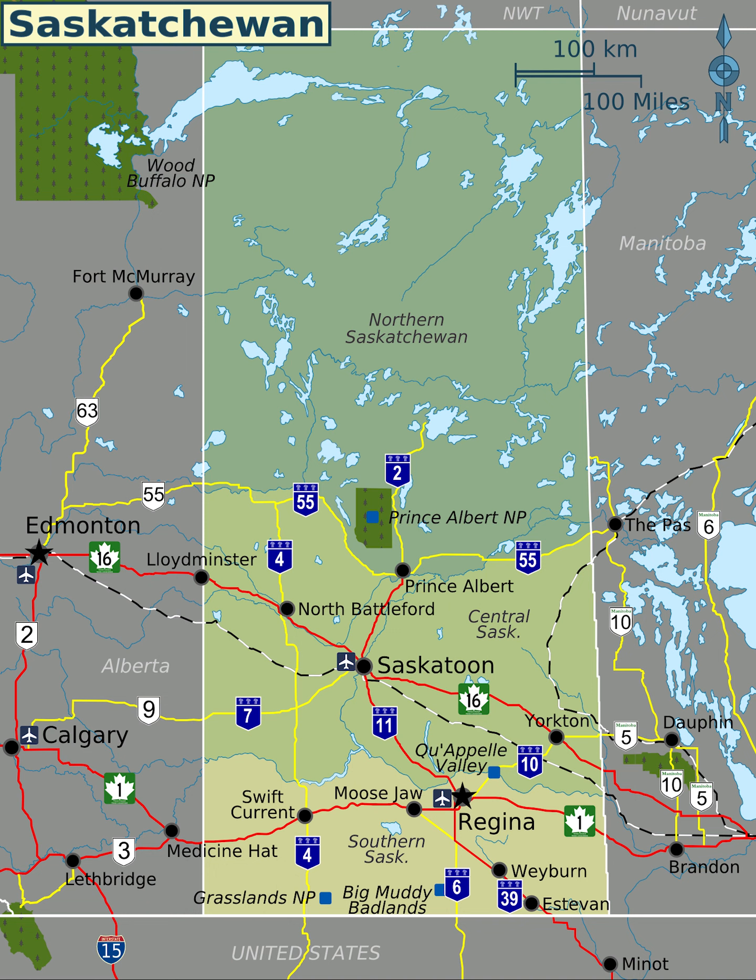The province's highest point, at 1,392 meters, is located in the Cypress Hills less than 2 kilometers from the provincial boundary with Alberta. The lowest point is the shore of Lake Athabasca, at 213 meters.